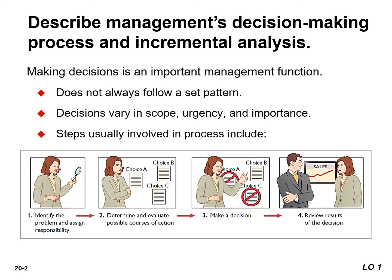Accounting's contribution to the decision-making process occurs primarily in Steps 2 and 4: evaluating possible courses of action and reviewing the results. In Step 2, for each possible course of action, relevant revenue and cost data are provided. These show the expected overall effect on net income. In Step 4, internal reports are prepared that review the actual impact of the decision.